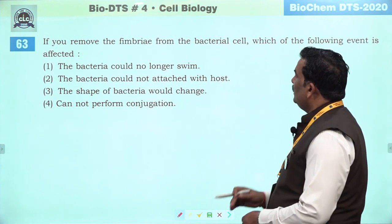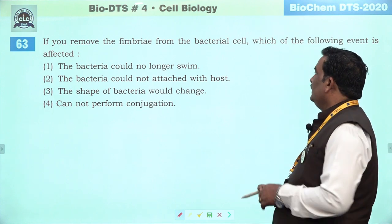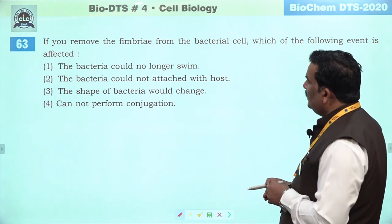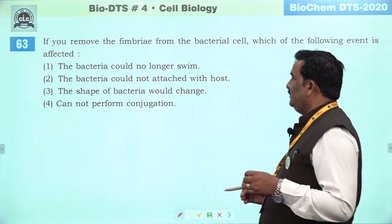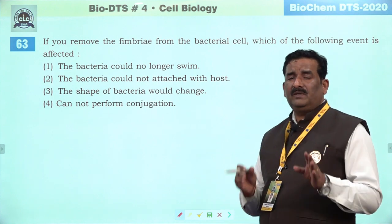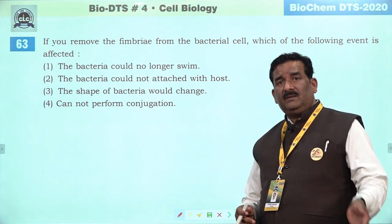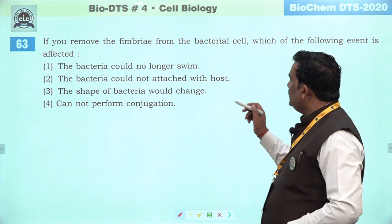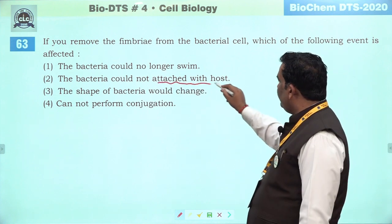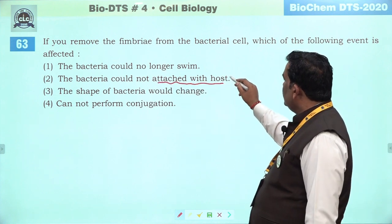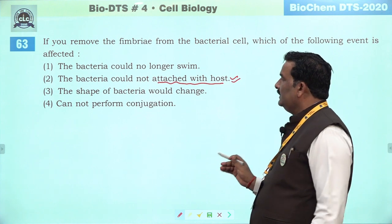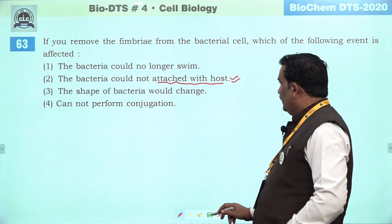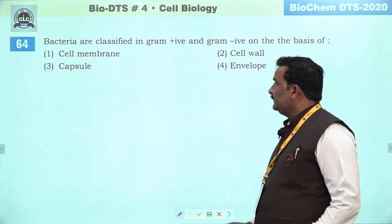Next question: if you remove the fimbriae from the bacterial cell, which of the following event is affected. Fimbriae is responsible for attachment of bacteria with any substratum and host. Iska attachment host se affect hoga. Second is the right answer — others are not connected with fimbriae.